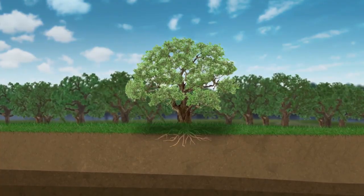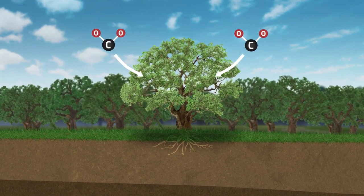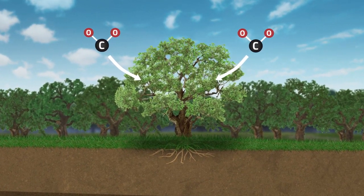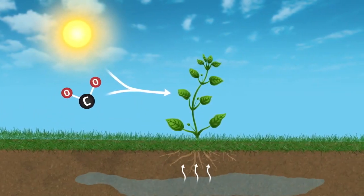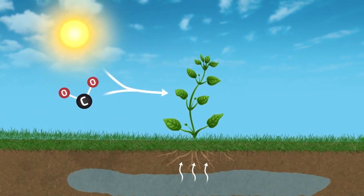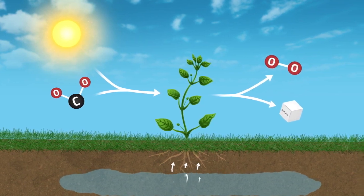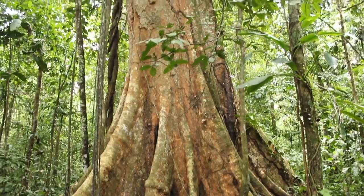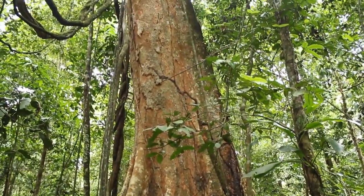On land, most carbon is stored in forests. Here, plants absorb carbon dioxide from the atmosphere into their cells. With energy from the sun, plants combine carbon dioxide and water to form carbohydrates such as sugar and oxygen through photosynthesis. In this process, carbon dioxide is converted to carbon-based cellular material.